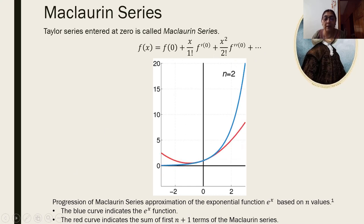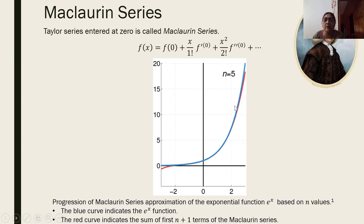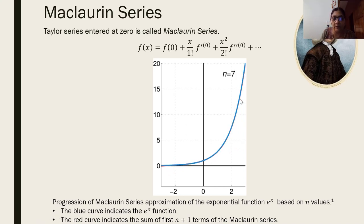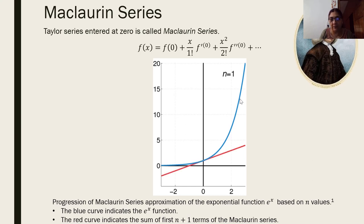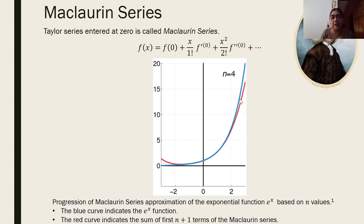Starting from n = 0: n = 1 gives the first term only; n = 2 gives the sum of two terms; n = 3 gives the sum of three terms of the Maclaurin series of e^x; n = 4 gives four terms; n = 5 gives five terms; n = 6 gives six terms.